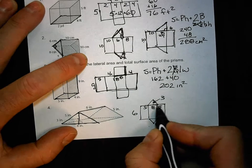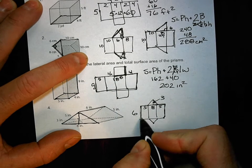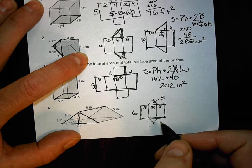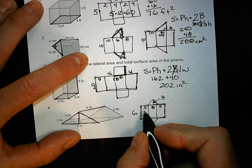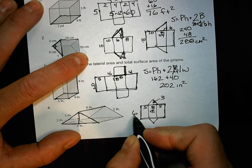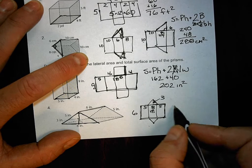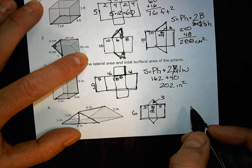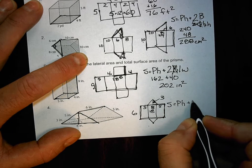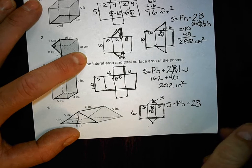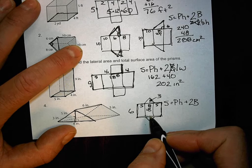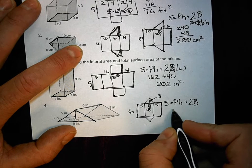So let's get the perimeter times the height. That says P times H. So what's the perimeter? We'll add them up. Five plus eight plus five. That's 18. So 18 times the height six. So Chris, what did you get for 18 times 6? 108.